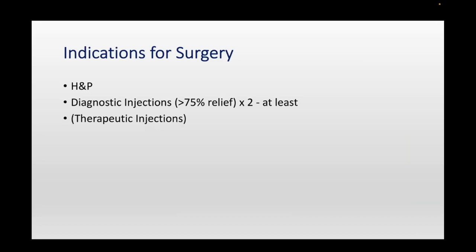We're looking for 75% relief, which is the NASS criteria to recommend further treatment. We typically always do two diagnostic injections — one injection is not enough. In our practice, I also recommend trying some therapeutic injections with steroids before going to surgery. That is our protocol. Sometimes if it's ambiguous, we'll send for a CT-guided injection. We really vet those patients out before recommending anything.